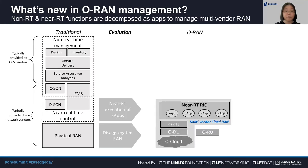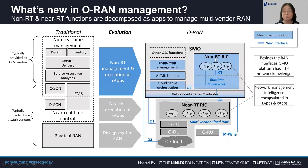With O-RAN evolution, the physical RAN elements are disaggregated into ORU, ODU, and OCU as virtualized functions, with open interfaces between them. A new near-real-time radio intelligent controller, or near-RT RIC, is created as the runtime environment to host the new near-real-time control applications called XApps. Similarly, in the higher layer management plane, it is the SMO. In keeping with the disaggregated O-RAN concept, the traditional OSS functions are decomposed into SMO platform and modular software applications called RApps for the actual management, such as FCAPs and CSOM, which usually takes a bit longer than the control functions.